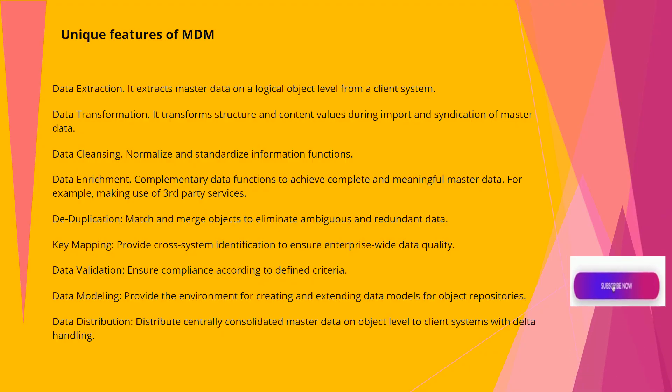Unique features of MDM: Data extraction — extracts master data on a logical object level from a client system. Data transformation — transforms structure and content values during import and syndication of master data. Data cleansing — normalizes and standardizes information. Data enrichment — complementary data functions to achieve complete and meaningful master data, for example making use of third-party services. Data duplication — matches and merges objects to eliminate ambiguous and redundant data. Key mapping — provides cross-system identification to ensure enterprise-wide data quality. Data validation — ensures compliance according to defined criteria. Data modeling — provides the environment for creating and extending data models for object repositories. Data distribution — distributes centrally consolidated master data on object level to client systems with delta handling.